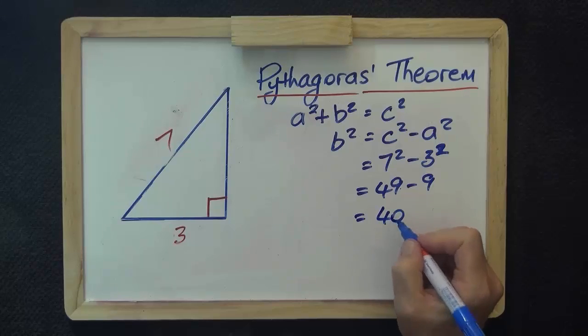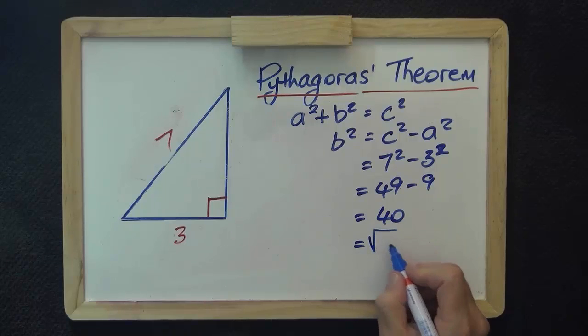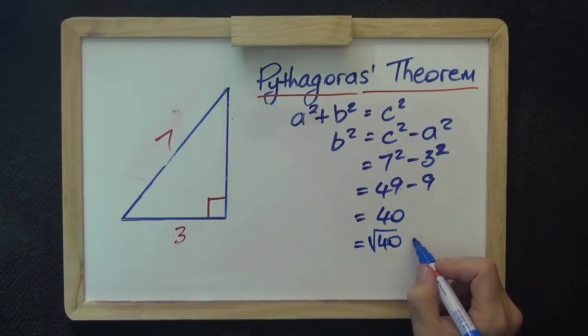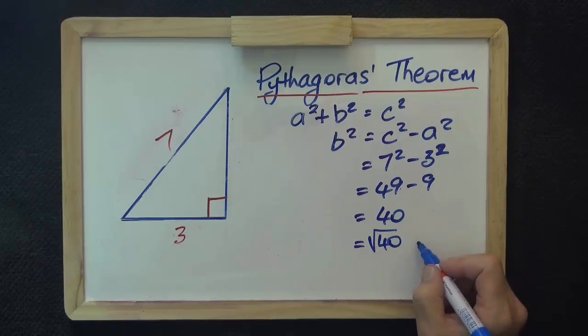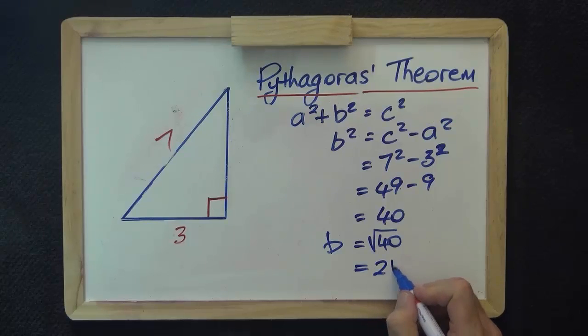Now, the square root of 40. Is there a square number there? There certainly is. It's 4. So that equals 2 root 10.